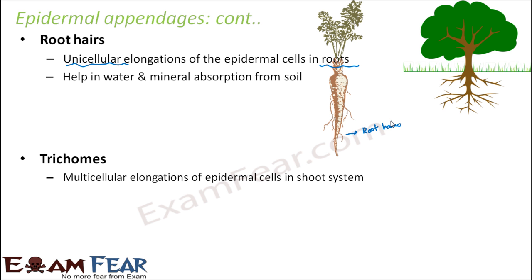The next one is trichomes. Trichomes are multicellular elongations of epidermal cells in the shoot system. So they are multicellular and they are part of the shoot system. When we say shoot system, it includes stem, branches, leaves, flowers — everything.